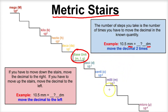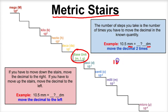Furthermore, which way are we moving on the metric stairs? Well, to go from milli to deci, we're moving up and to the left. So we're going to have to move this decimal here two times to the left. So if we're starting off with 10 and a half millimeters and we want to figure out how many decimeters this is, we're going to have to move this decimal two times to the left.